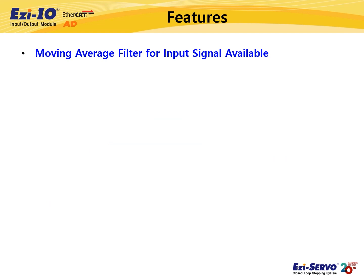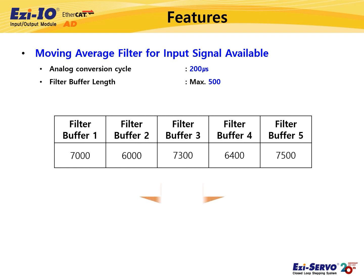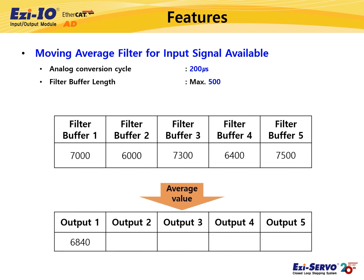I will explain how this moving average filter works using an example of significant analog input data fluctuation due to noise. When the moving average filter function is activated, new analog input data is saved in the filter buffer as a digital value every analog conversion cycle of 200 microseconds. The number of buffers is set with the filter buffer length, and the maximum number of buffers is 500. Here, the filter buffer length is set as 5, so 5 input data values are added and an average value is calculated.